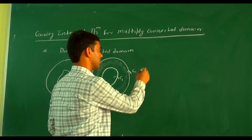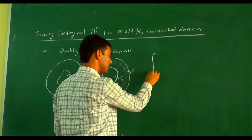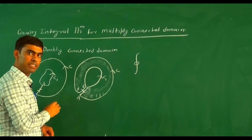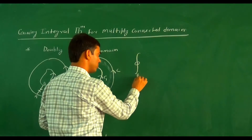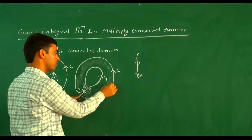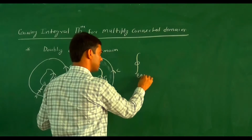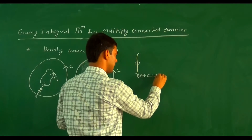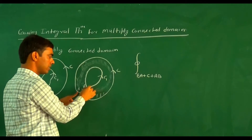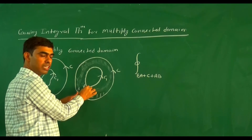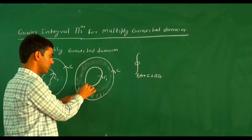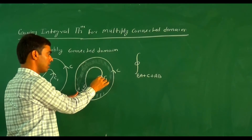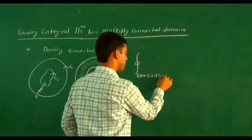Once converted to a simply connected domain, the contour C becomes: BA + C + AB - C₁. Since f(z) is analytic in a simply connected domain, and the contour is BA + C + AB - C₁, the value equals zero. The path BA and AB have opposite directions, so they cancel. And minus C₁ can be written as minus the integral over C₁ of f(z) dz.